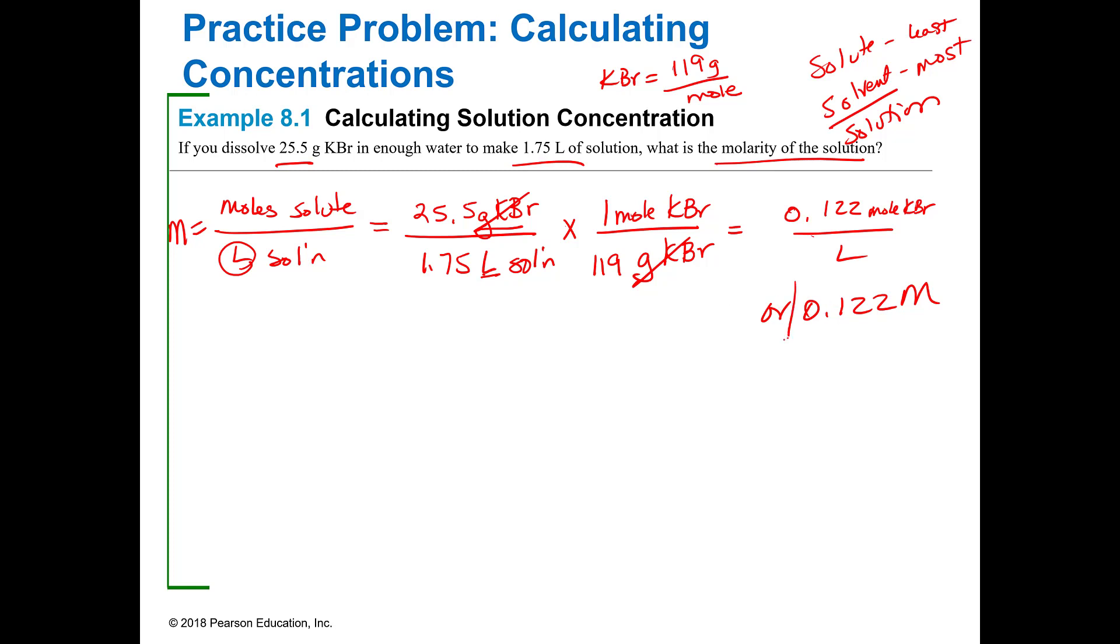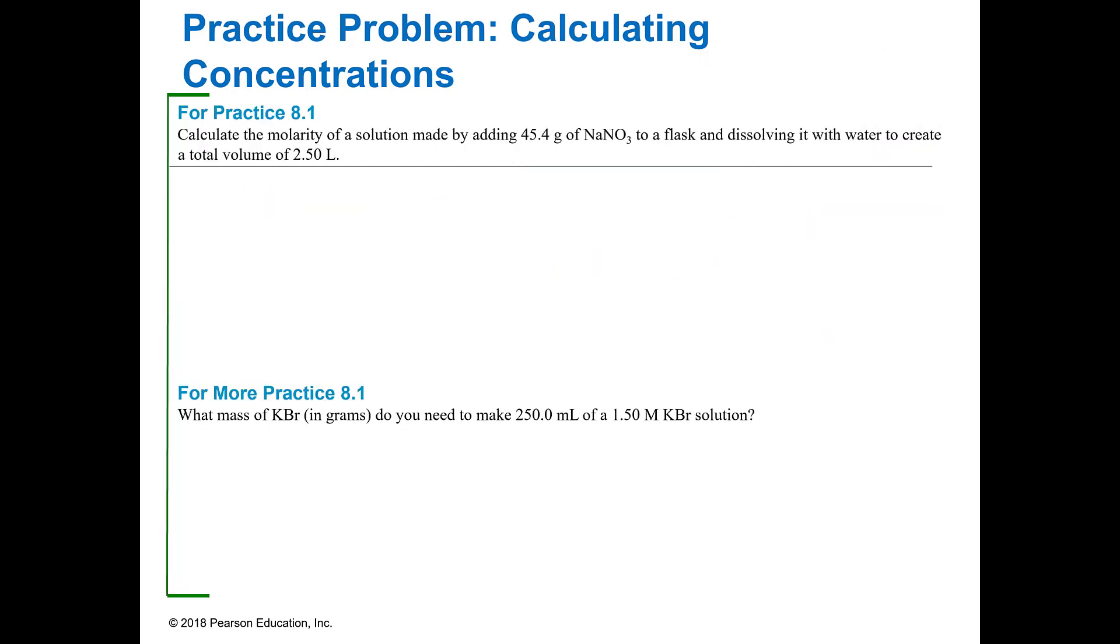Or 0.122 molar. So that is the molarity in moles per liter when you have 25.5 grams of potassium bromide in water and you fill it all the way up to 1.75 liters. So that's how you calculate molarity by concentration. I'll give you a couple of practices on these.